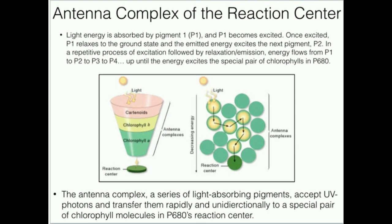The antenna complex in plants that occurs before the electron transport chain you could sort of think of as an energy transport chain. We have excitation of an electron, relaxation of that electron, which causes the excitation of another electron in the nearby molecule.